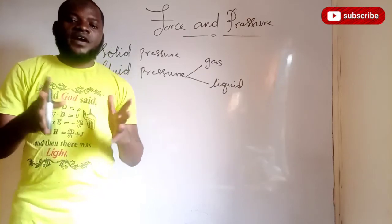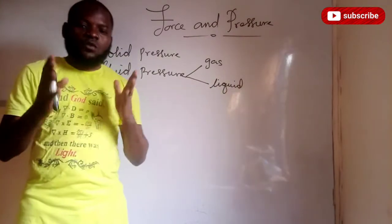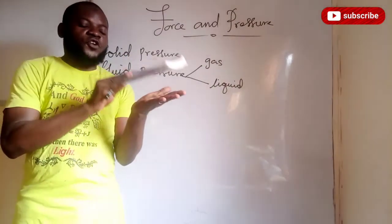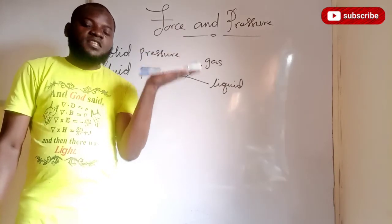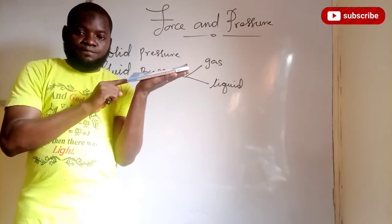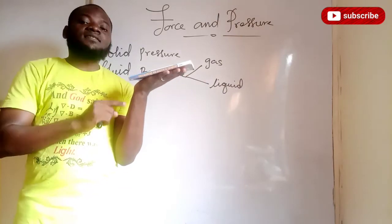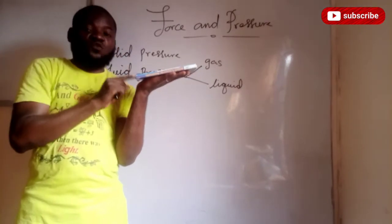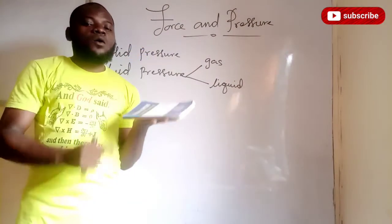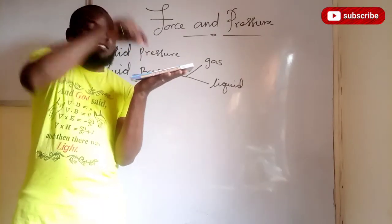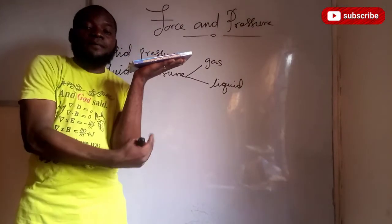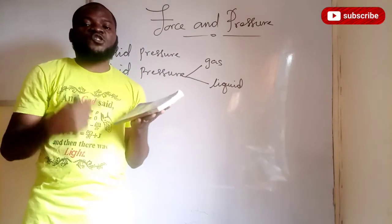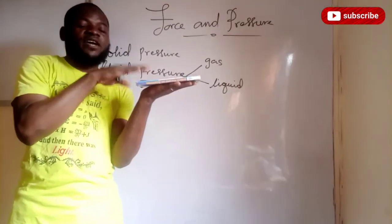We are going to start the class by understanding what we call pressure. If I pick this book and drop it on my palm, this book definitely has a mass m and is exerting a certain force equivalent to its weight on this palm. Since that force is directly perpendicular to my palm, the ratio of that force to the area of this palm is what we refer to as the pressure that this book exerts on my palm.